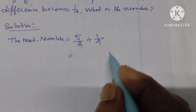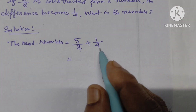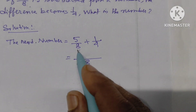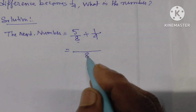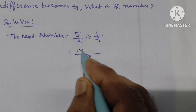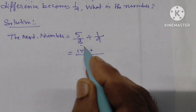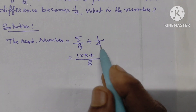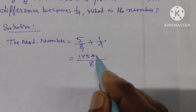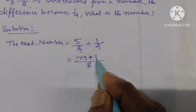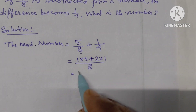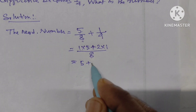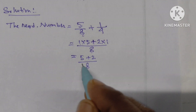LCM of 8 and 4 is 8. 8 divided by 8 is 1; 1 into 5 gives 5. 8 divided by 4 is 2; 2 into 1 gives 2. So the answer is 5 plus 2 by 8, that is 7 by 8.